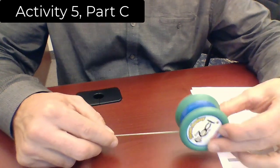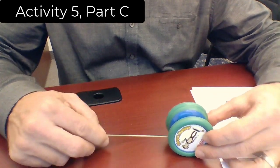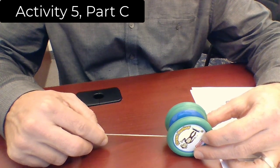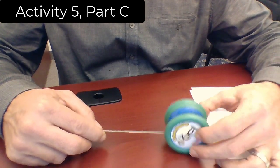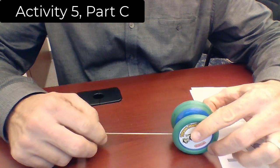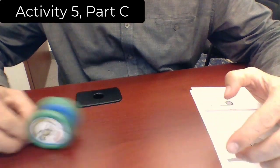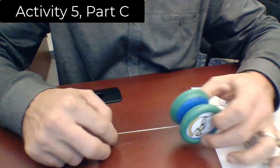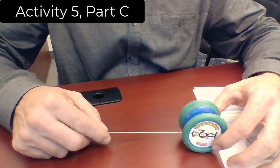Next, Part C. I'm going to set up the yo-yo so I'm pulling the string to the left this time, and I'm going to have it wrapped around the bottom, so horizontal bottom. Again, which way does the yo-yo rotate?